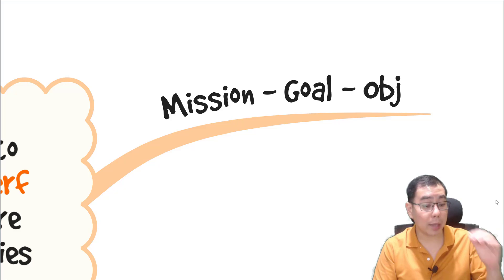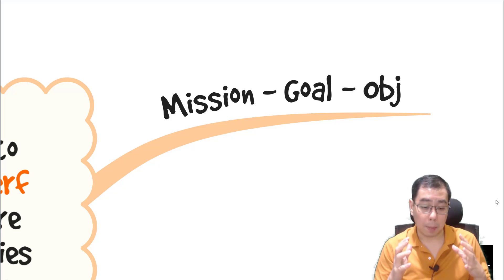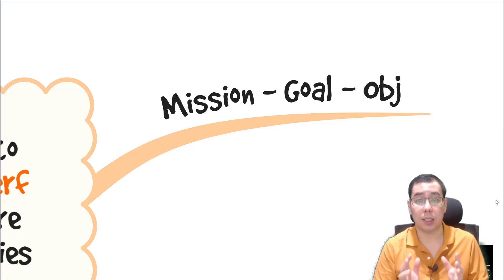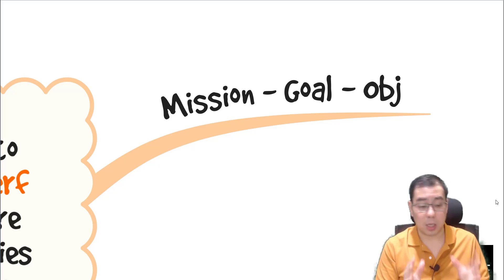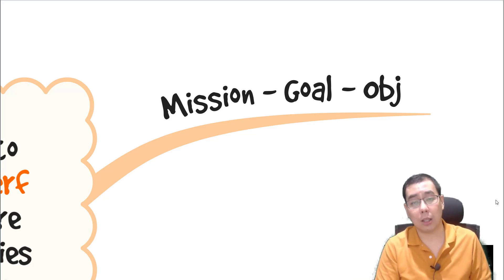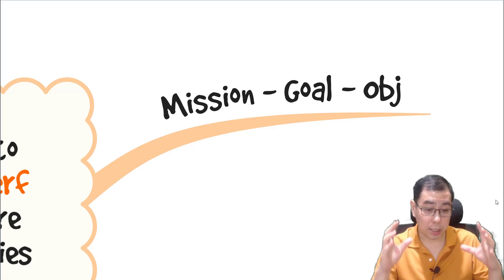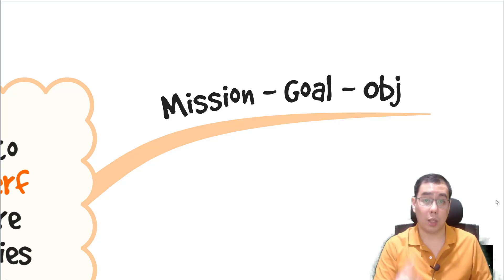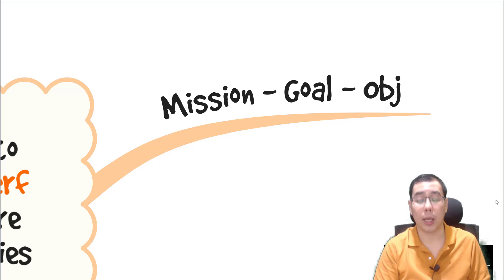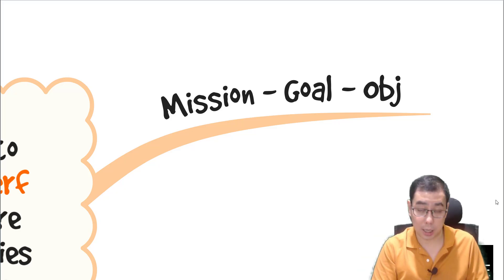When we talk about measuring performance, we need to start by understanding what is the mission of your company. Mission is the basic purpose of existence of your organization. If you have practiced sufficient APM questions, you will realize that a majority of questions start off by telling you about the mission. When you read the exam question and you see the mission, highlight it. Mission will influence your goal, and the goal will then influence your divisional or departmental objectives.